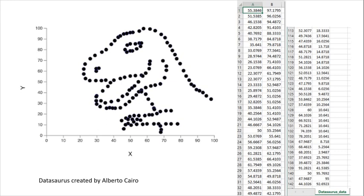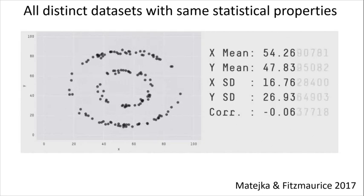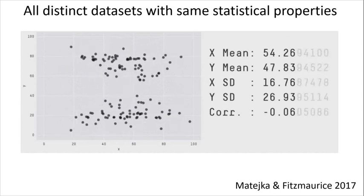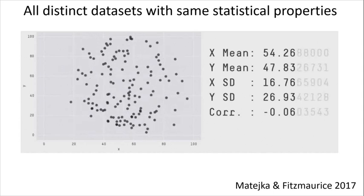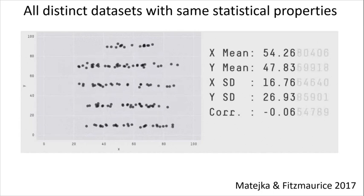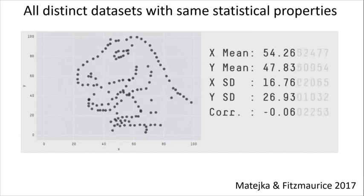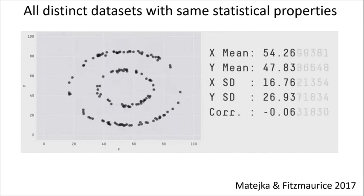It was invented by my data viz crush, Alberto Cairo. I just want to point out the importance of seeing the data as statistics and the data as a visual tool. These folks actually expanded on the idea of the Datasaurus. They created 13 distinct data sets that all have the exact same mean for x and y, the same standard deviation for x and y, across all 13 data sets, to two decimal places.